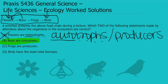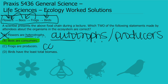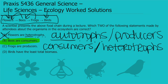Answer C says frogs are producers. We just talked about producers — they are photosynthetic organisms that make their own food, like flowers. In our food chain, frogs are eating insects, so they're consuming other things. Frogs are consumers, or heterotrophs — they're feeding on others. So C is not the right answer. By process of elimination, D must be the second correct answer.